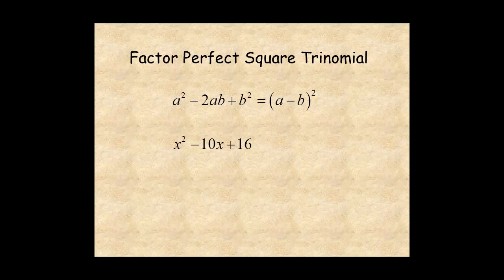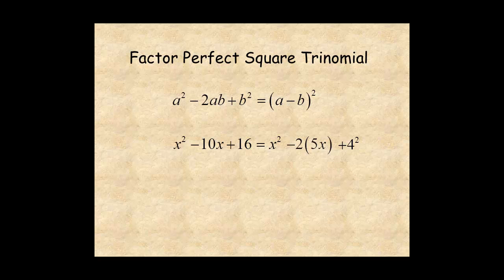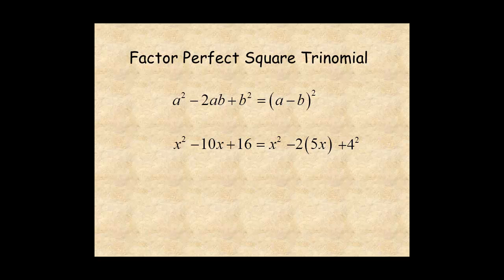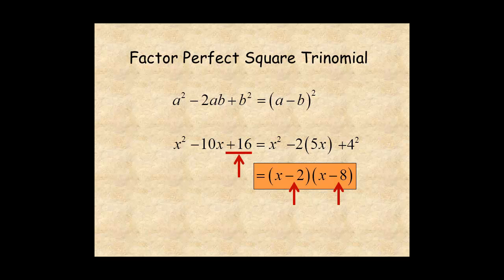Here's a trinomial that looks like a perfect square. The first and last terms are squares; however, when you rewrite the trinomial, the middle term is 2 times 5x, when it should be 2 times 4x to match the pattern. So this trinomial is not a perfect square. However, it does factor as x minus 2 times x minus 8, since negative 2 and negative 8 are factors of positive 16 that add up to negative 10.